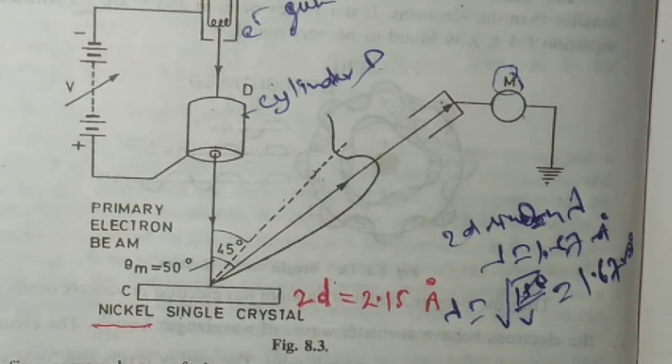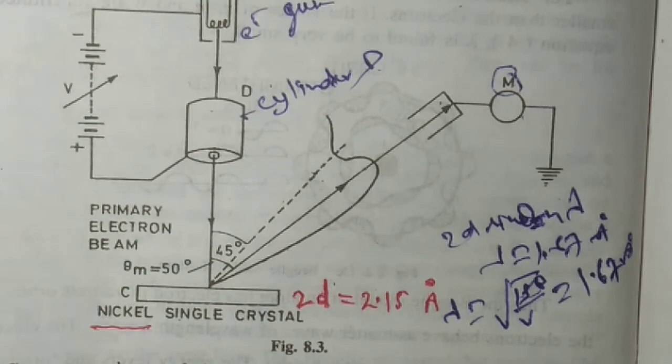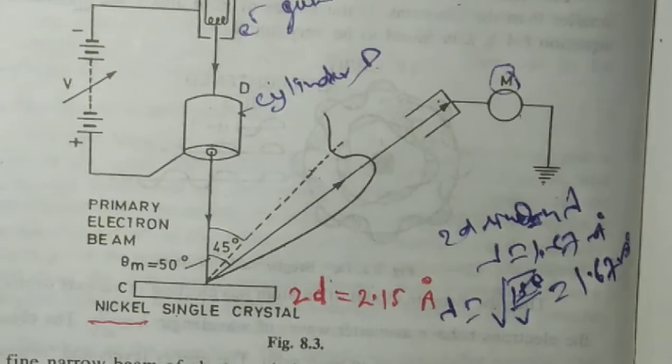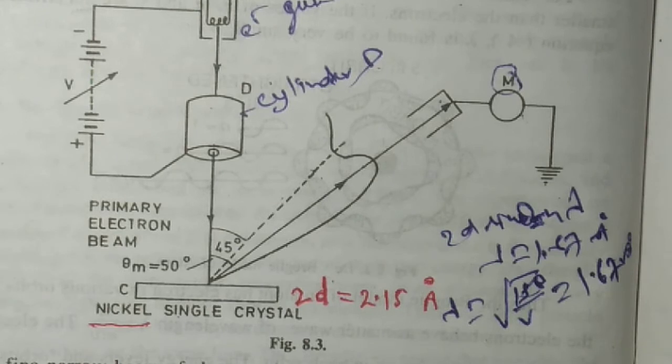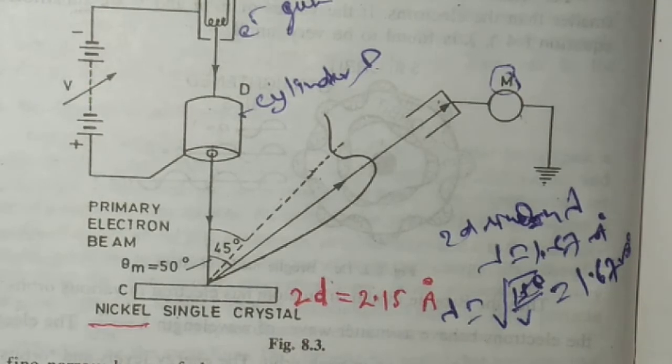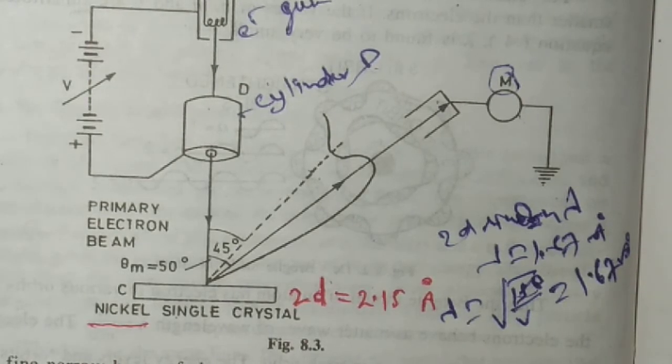This was the Davisson and Germer experiment that successfully explained electron's wave behavior. I hope this video is clear. This is all for this video.